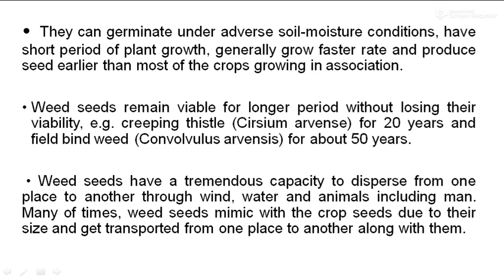Weeds have a tremendous capacity to disperse from one place to another through wind, water, animals, and man. Weed seeds often mimic crop seeds in size and get transported along with them — for example, wild rice in rice crops. At harvesting, mimic weeds easily mix with agricultural crops and are transported elsewhere. Some weed seeds also have parachute-like, wing-like, or burr-like structures that aid dispersal through wind.